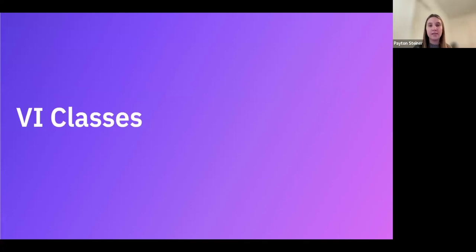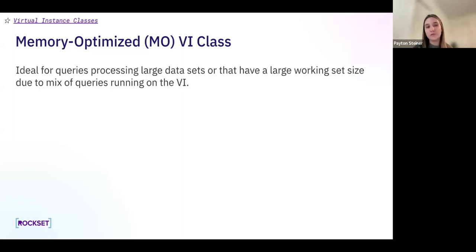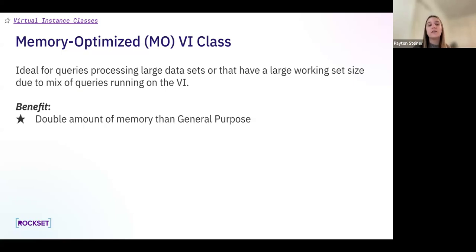Next I want to talk about VI classes — this is a new concept we've introduced. The first class is memory optimized, which is what our virtual instances have always been prior to this new concept. Memory optimized classes are ideal for queries processing large data sets or that have a large working set size due to a mix of queries. The benefit is that you get double the amount of memory compared to the general purpose class when using the same VI size. So on a small VI, you get the same compute but more memory with memory optimized.